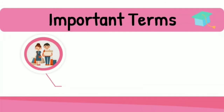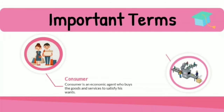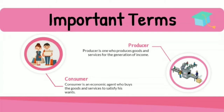The two important terms related to economics are Consumer and Producer. A Consumer is an economic agent who buys goods and services to satisfy his wants. A Producer is one who produces goods and services for the generation of income.